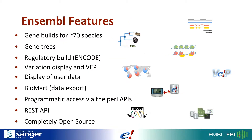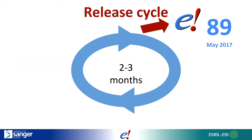Ensembl has gene builds for approximately 70 species. We have gene trees, regulation and variation data, the VEP tool. You can display your own data on our browser, access bulk data via Biomart, the Perl API, the REST API, and it's all completely open source.